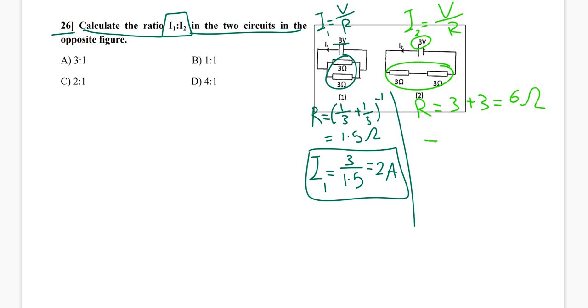So I2 is going to be 3 by 6, which is 0.5.